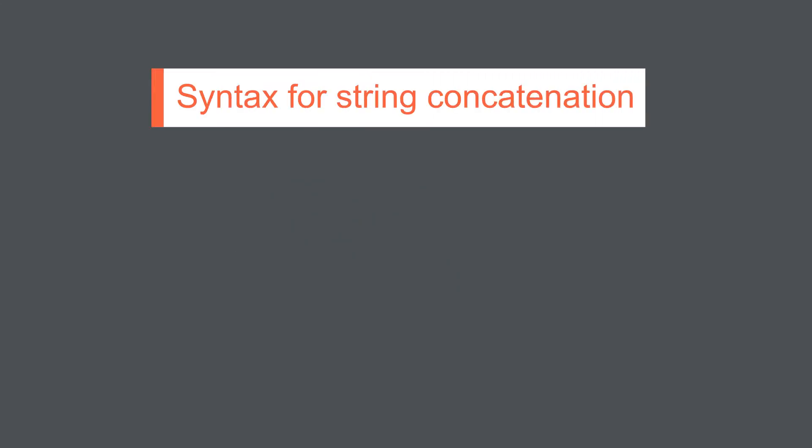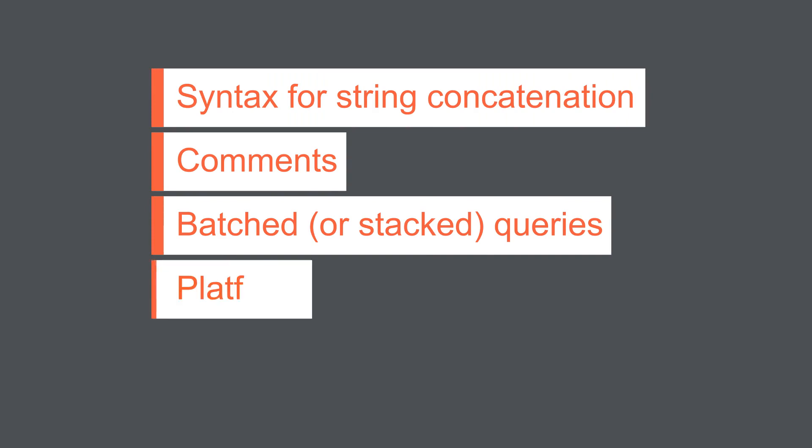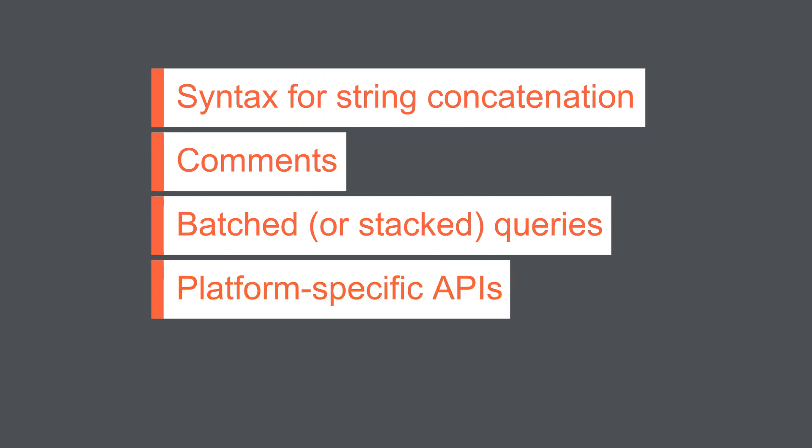Some core features of the SQL language are implemented in the same way across popular database platforms, and so many ways of detecting and exploiting SQL injection vulnerabilities work identically on different types of database. However, there are also many differences between common databases, meaning that some techniques work differently on different platforms. These differences arise in areas like syntax for string concatenation, comments, batched or stacked queries, platform-specific APIs, and error messages.